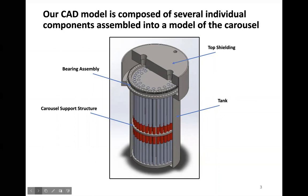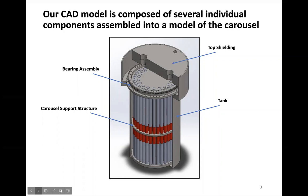First is the carousel support structure, with the main function of holding the fuel assemblies in place. Next is the bearing assembly, which allows the carousel to rotate to each position and also holds the weight of the support structure and fuel assemblies. Next is the top shielding, which shields the floor level from radiation heat while providing access to the fuel assemblies and gear teeth of the bearing assembly. The last main component is the tank, which attaches to the bearing assembly and provides a heat transfer path.